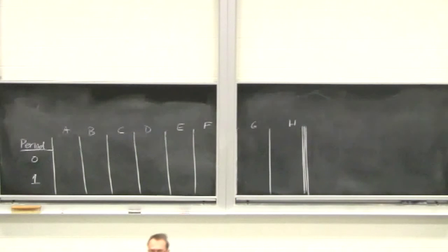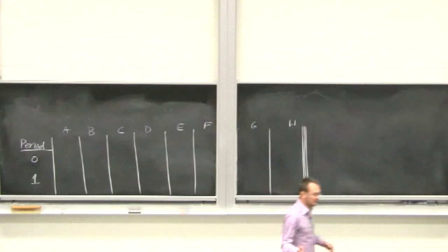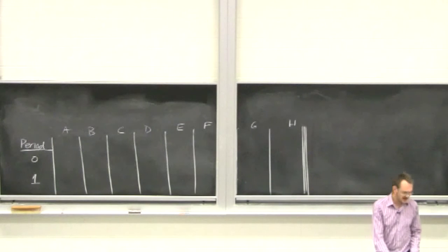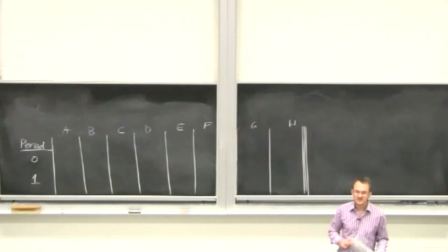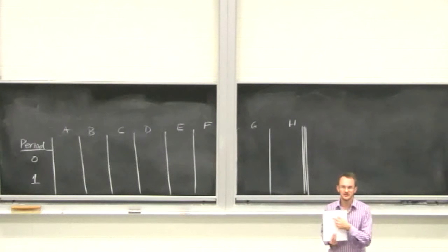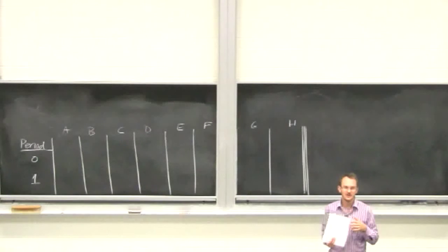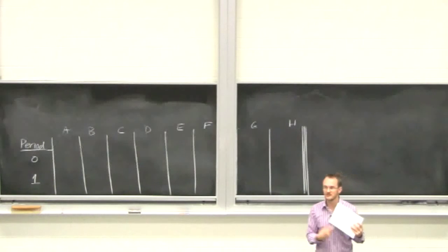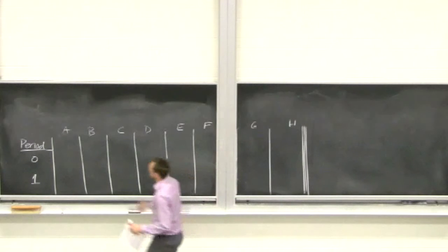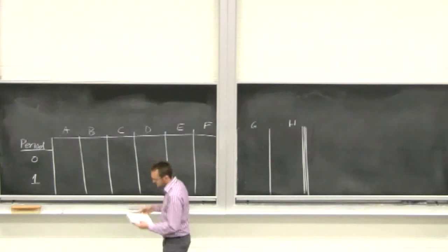Work through period zero first, and if ahead you can start period one. Figure out what goes in columns A, B, C, D, E, F, and G. On an exam, fill the table in landscape orientation so you don't run out of space. Let's now work through the first period — period zero.